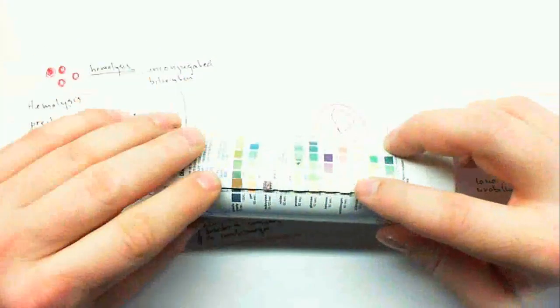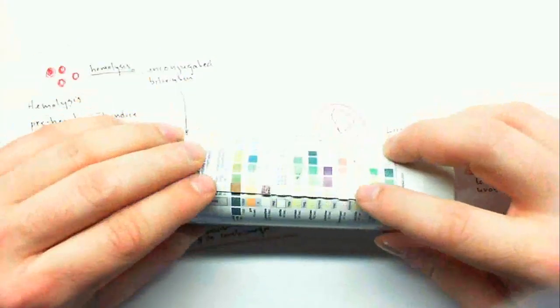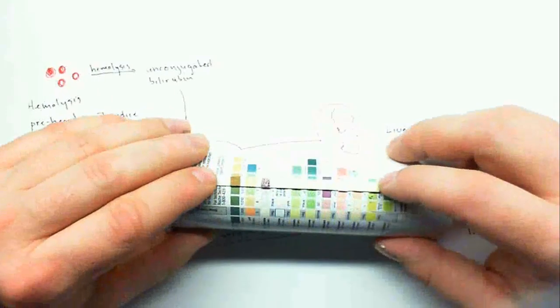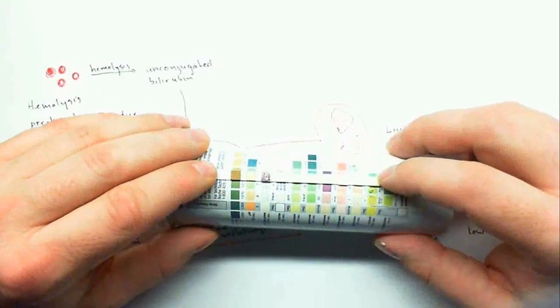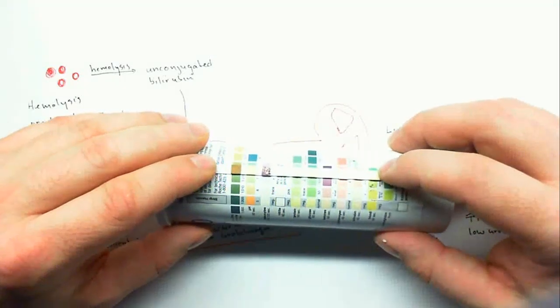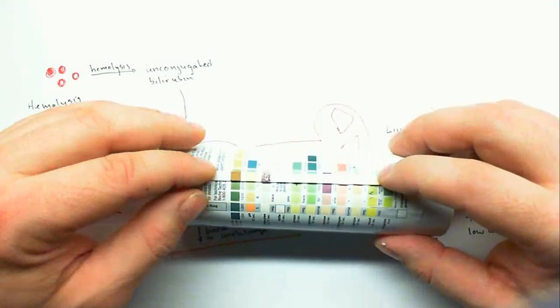In this one, I'm trying to indicate dehydration, so there's a really high specific gravity. There's also leukocytes present, and that could indicate any kind of infection that's causing diarrhea or throwing up, causing dehydration, and there's clearly also an infection.